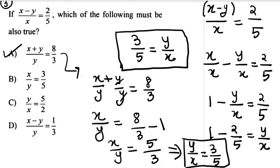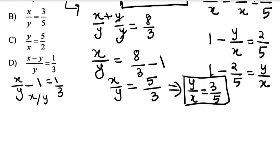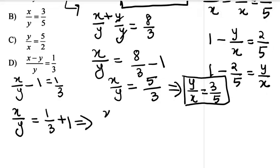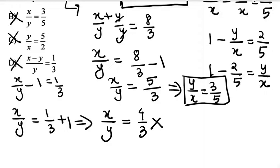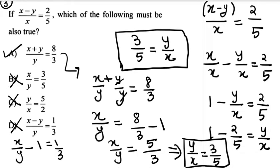Option 2 — x is 3, y is 5 — not possible. The third option: x by y minus 1 equals 1 by 3, so x by y equals 1 by 3 plus 1 equals 4 by 3. That is not correct. So the correct option is option A.